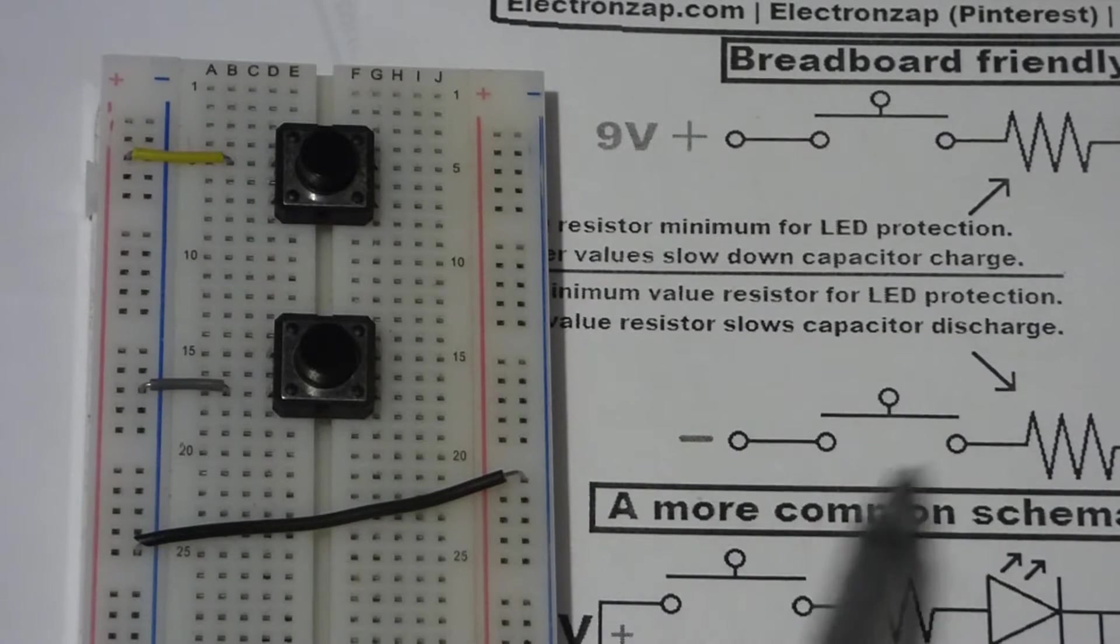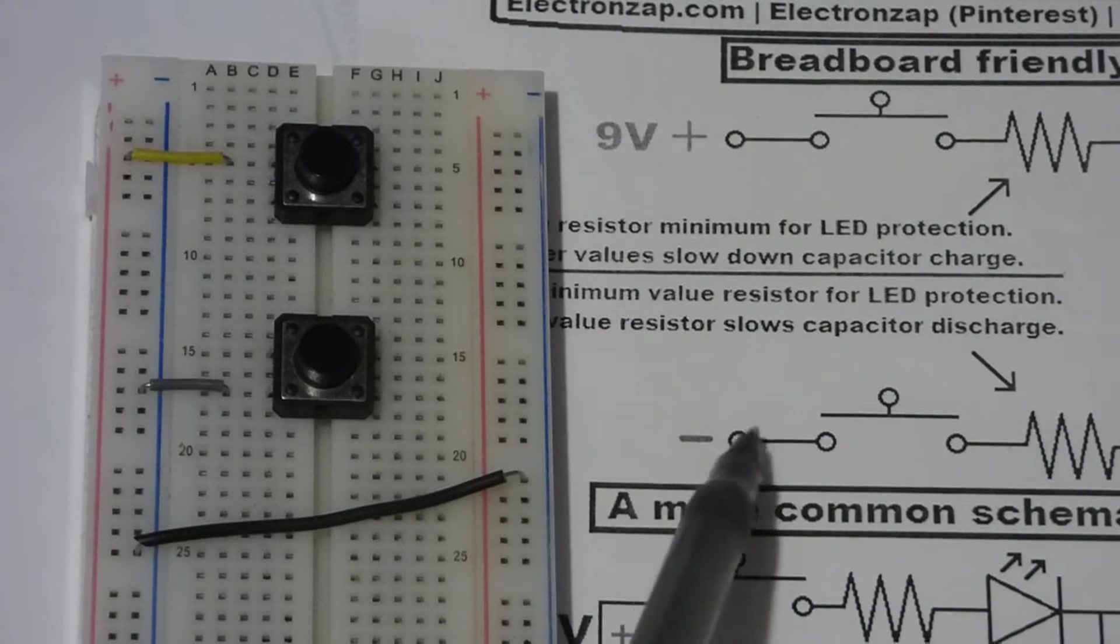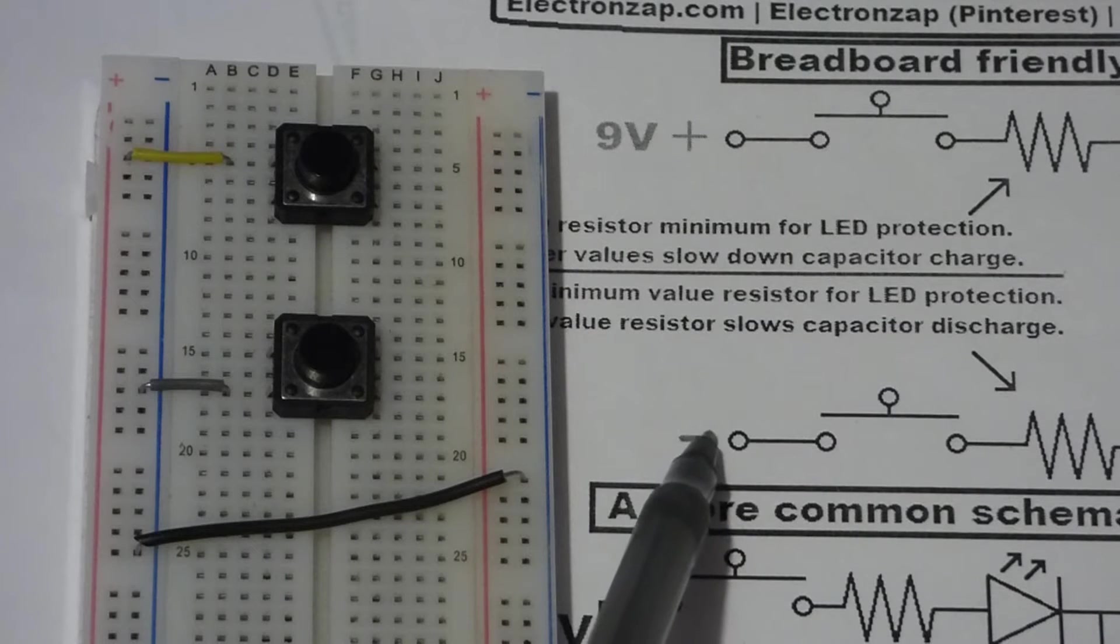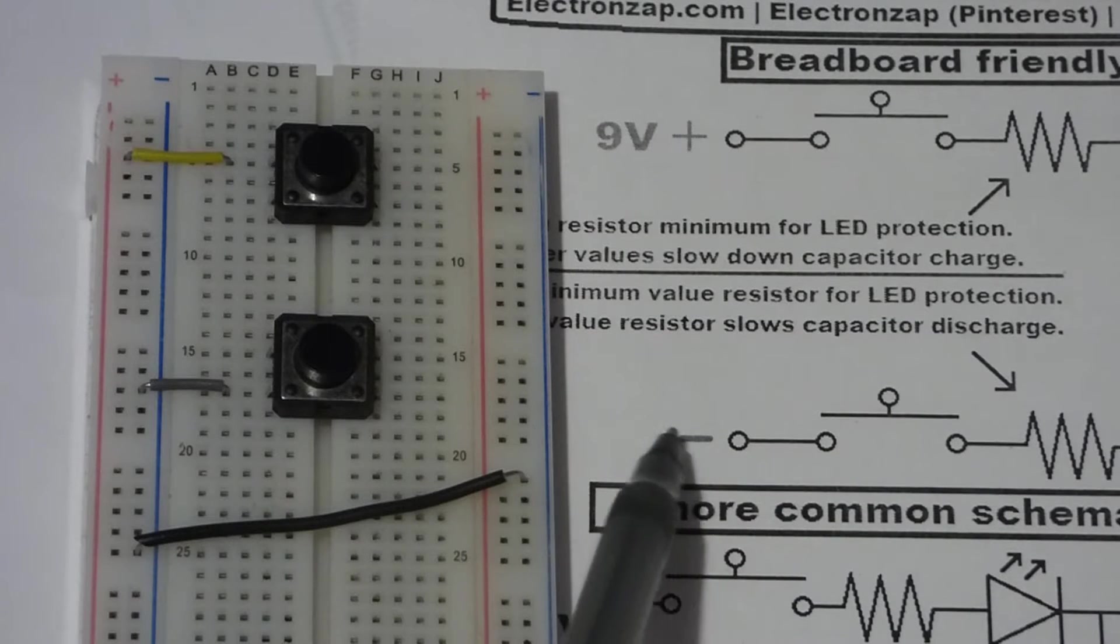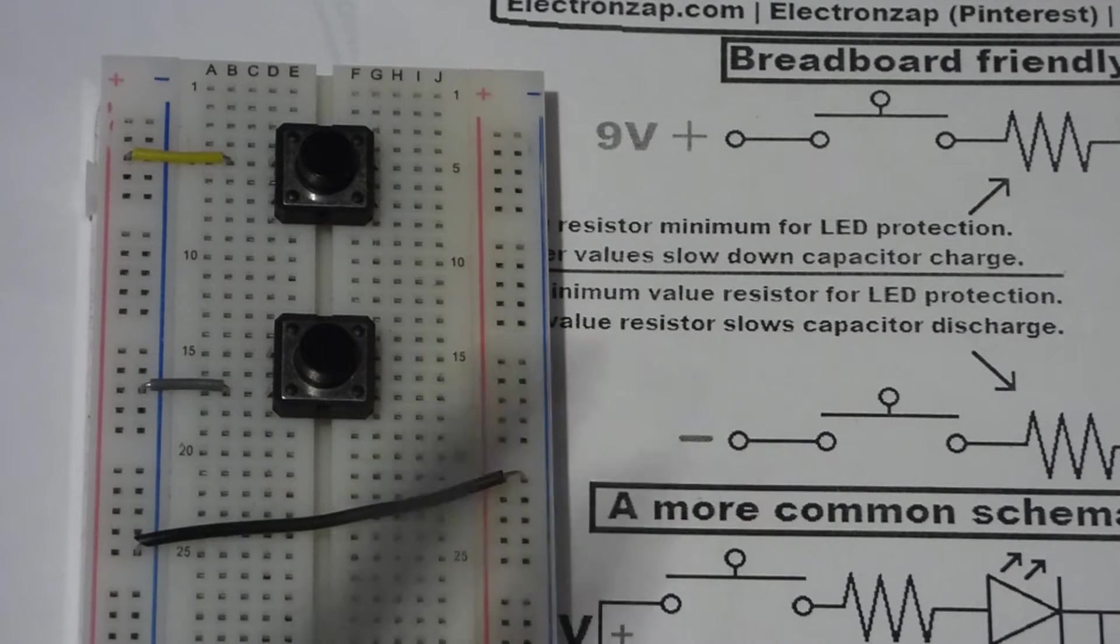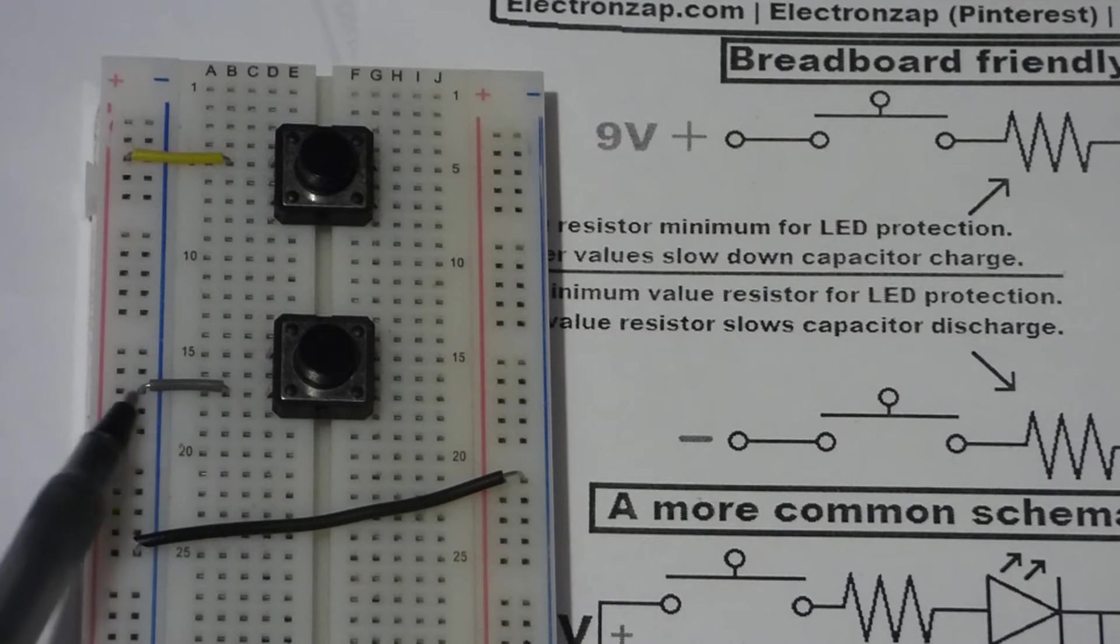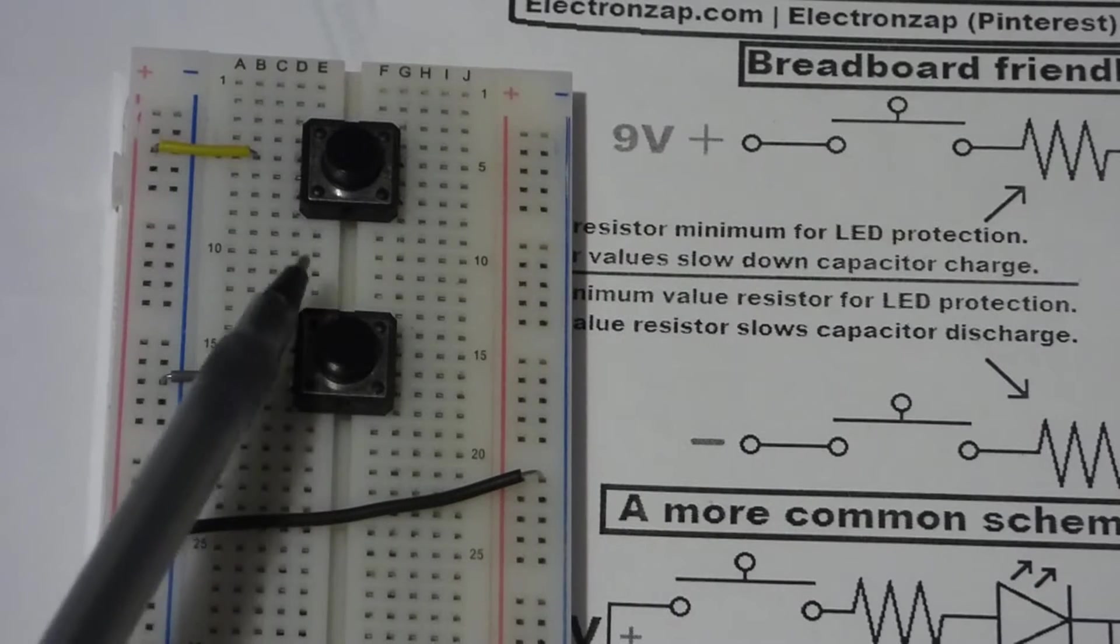Now this push button switch here is connected to the negative, to the ground, and sometimes this is signified by a long line on top, medium line below it, and then a shorter line below that. That stands for ground, same thing.